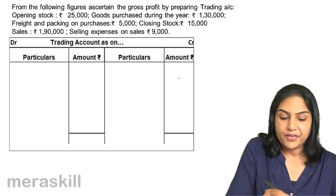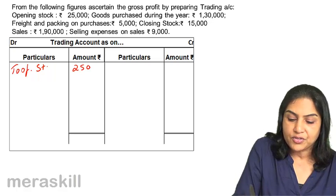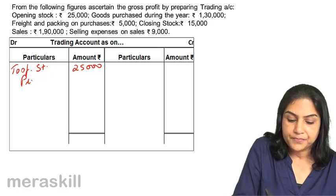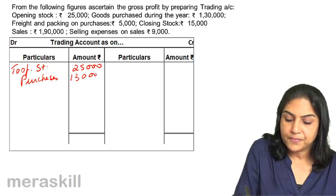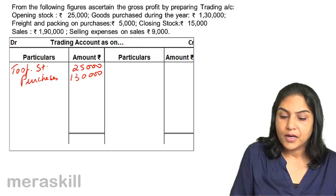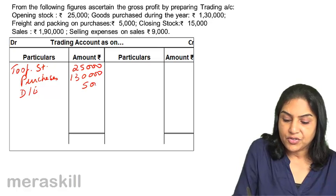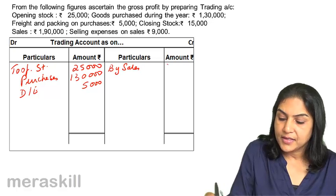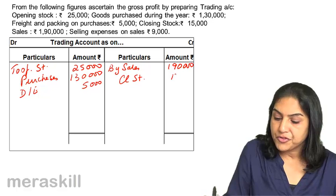So how do we prepare a trading account format? Opening stock is 25,000. Goods purchased — so purchases 1,30,000. Freight and packing on purchases, that is direct expenses, 5,000. By sales 1,90,000 and by closing stock 15,000.